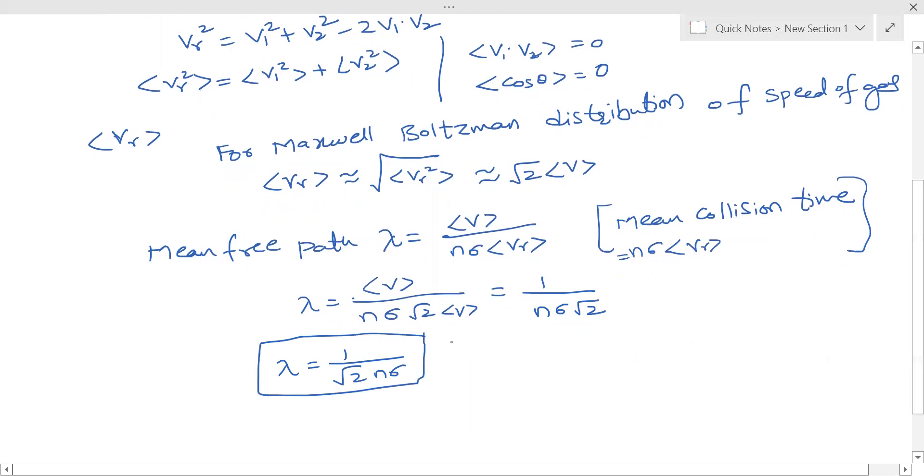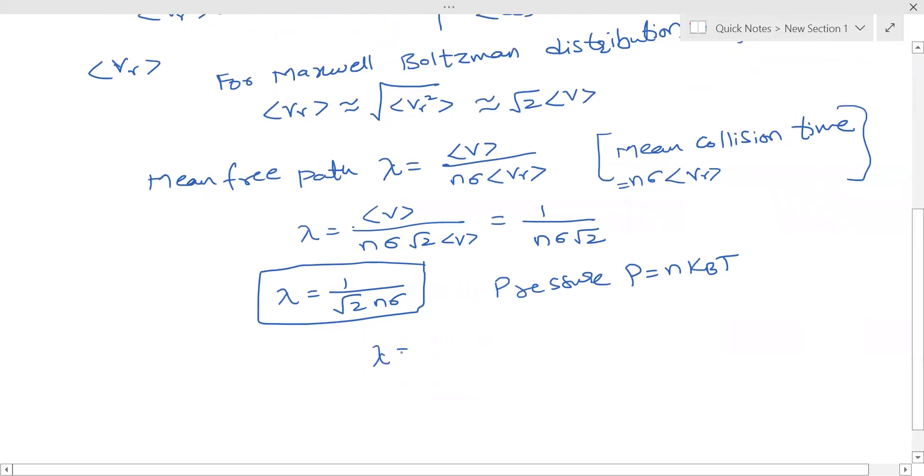When we substitute pressure, pressure p is equal to n kBT, where n is the number of molecules per unit volume. We will see in another lecture the derivation of pressure. So when we substitute that here, n is nothing but p over kBT, so lambda will be equal to kBT over root 2 sigma p.